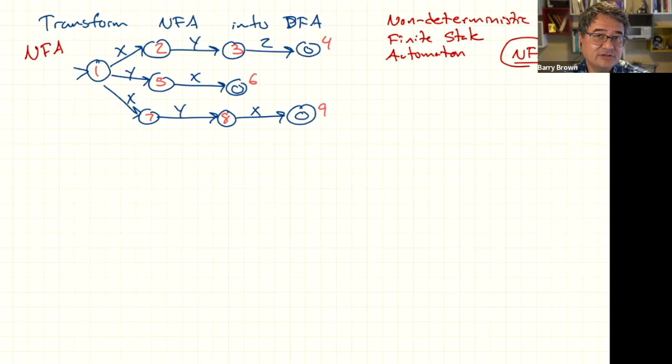It's called non-deterministic because there's no absolute choice, there's no deterministic choice that you make at all of the states about which transition to follow. There's some choices that you might have to make.